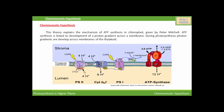According to the chemiosmotic theory, as electrons are transported down the electron transport chain, some of the energy released is used to pump hydrogen ions across the thylakoid membrane into the lumen of the thylakoid. Due to the accumulation of protons, a proton gradient — or proton motive force — is developed. The accumulating protons in the lumen pump back across the thylakoid membrane through the ATP synthase enzyme complex.